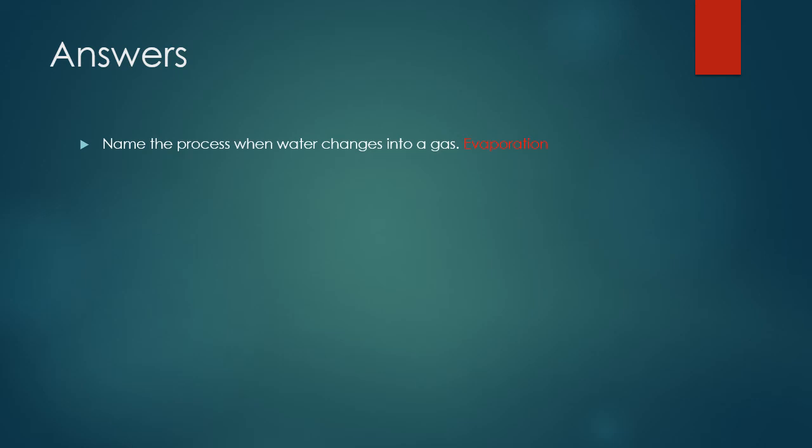The process when water changes into a gas is called evaporation — the liquid is changing into a gas, evaporating and going up into the clouds. The process when water vapour changes into clouds is called condensation. The gas is now changing into a liquid. Remember, condensation means a gas is changing into a liquid.